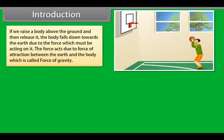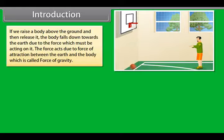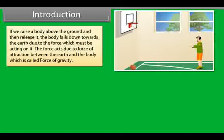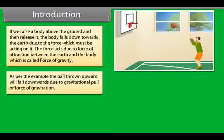If we raise a body above the ground and then release it, the body falls down towards the earth due to the force which must be acting on it. The force acts due to the force of attraction between the earth and the body, which is called force of gravity. The ball thrown upward will fall downwards due to gravitational pull or force of gravitation.